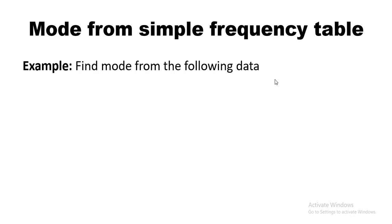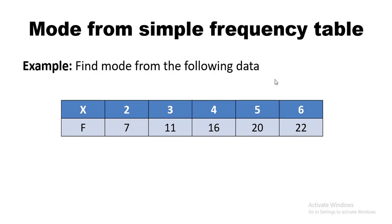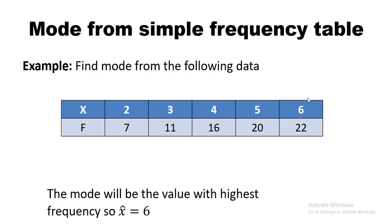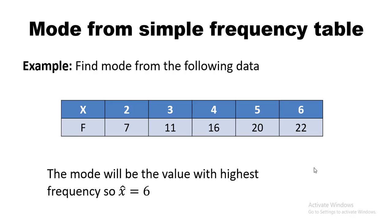Now we look for the mode from a simple frequency table. Given a table with observations and their frequencies, we look for the observation that has the highest frequency. In this case, the highest frequency is 22, which corresponds to observation 6. Therefore, the mode is 6.